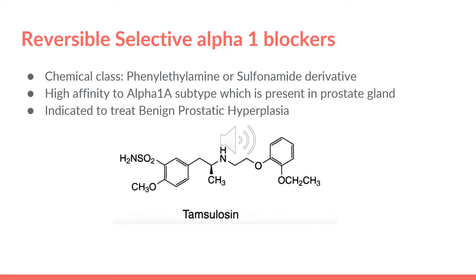We also have tamsulosin. It's also a selective alpha-1 blocker. Its chemical class is phenylethylamine or sulfonamide derivative. It has a high affinity to the alpha-1A subtype, which is present in the prostate gland, and it's indicated to treat benign prostatic hyperplasia.